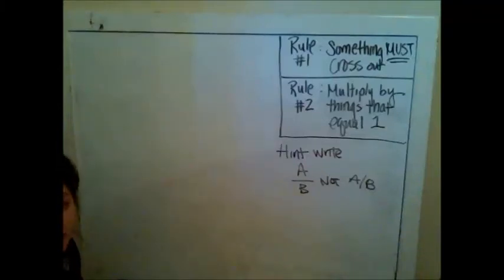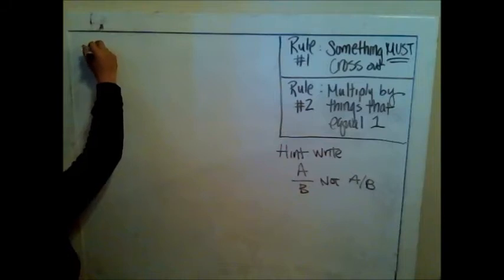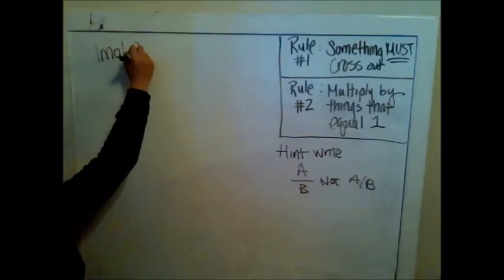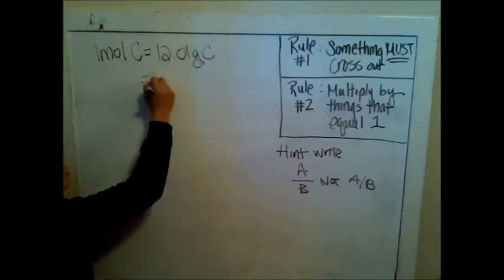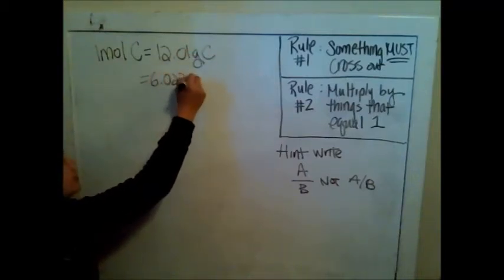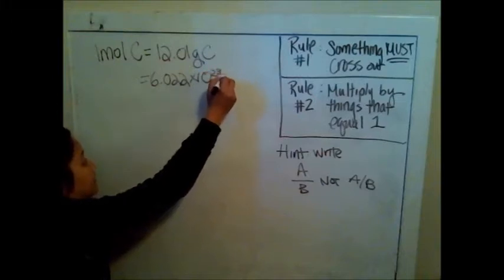There's really a couple different ways that we might use dimensional analysis in chemistry. Hopefully we've already taught you what the mole is by now. We can look at the periodic table and say one mole of carbon is 12.01 grams of carbon, and that one mole of anything is 6.022 times 10 to the 23rd of that something.